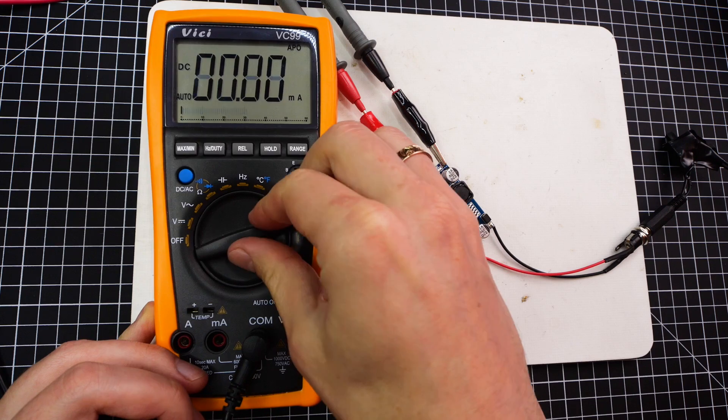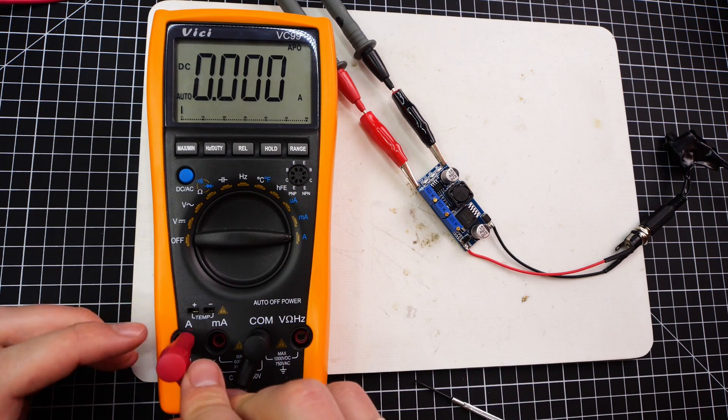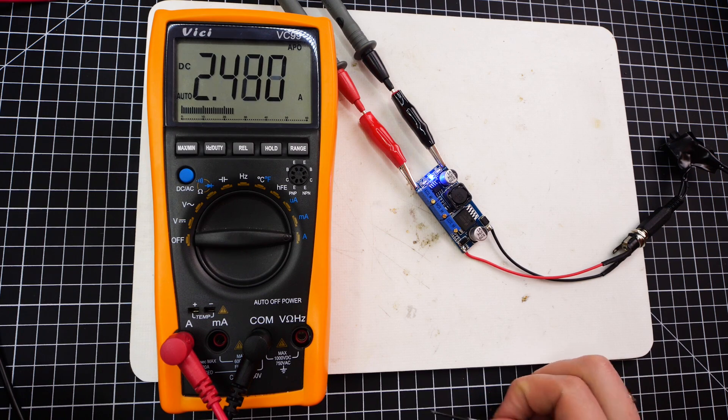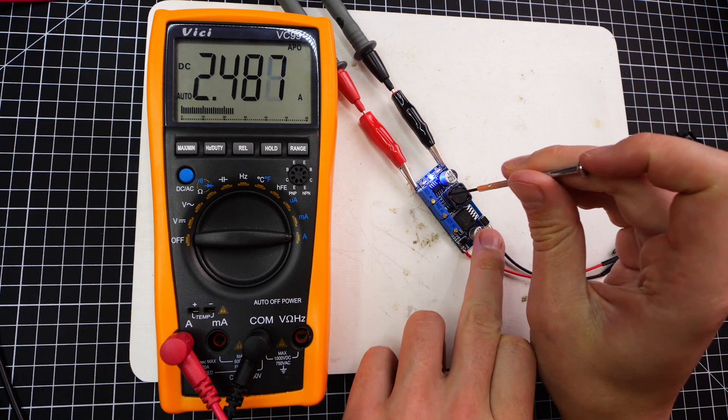Now for the current. I tested 200mA to give a good balance between brightness, heat and power consumption. So let me set the module to source that.